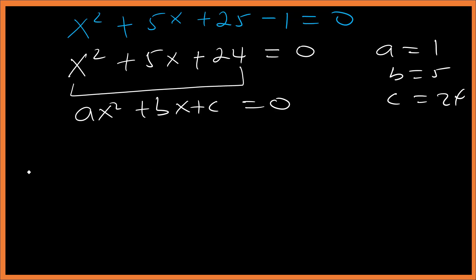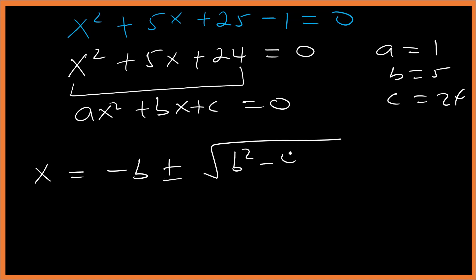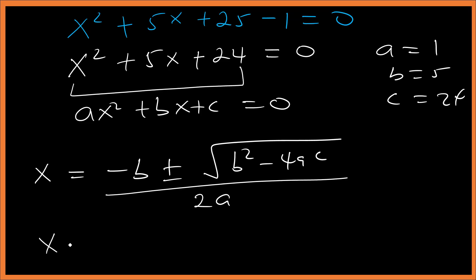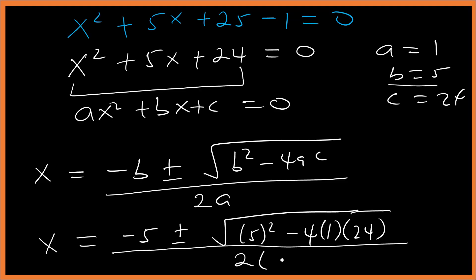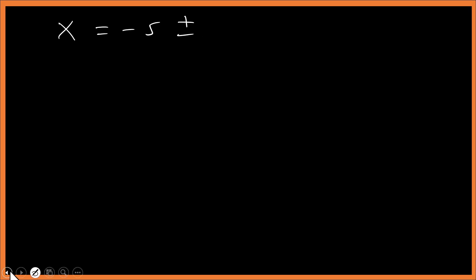Using the quadratic formula: x = (-b ± √(b² - 4ac)) / 2a. With b = 5, a = 1, c = 24: x = (-5 ± √(25 - 96)) / 2.